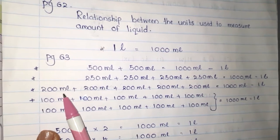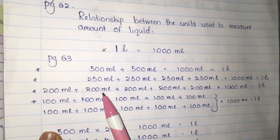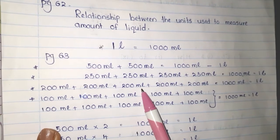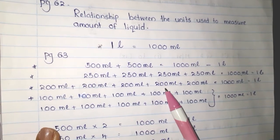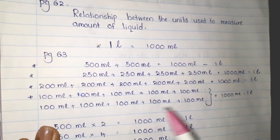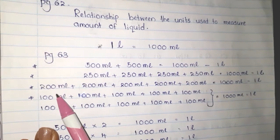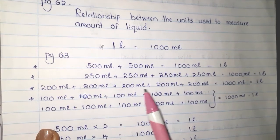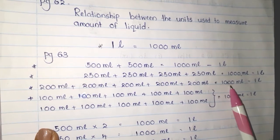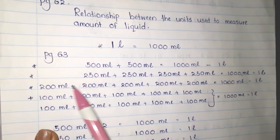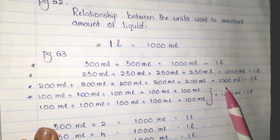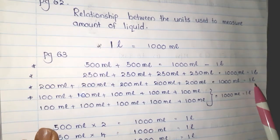200 milliliters plus 200 milliliters plus 200 milliliters plus 200 milliliters plus 200 milliliters — how many 200s have I taken? Five. When you add all the 200 milliliters, it equals 1000 milliliters, which means 1 liter.